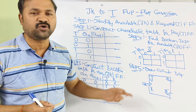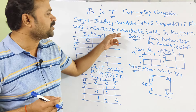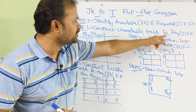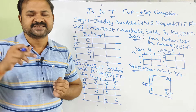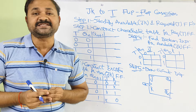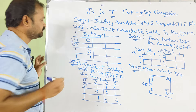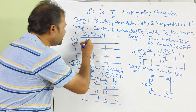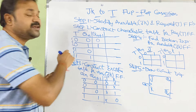Step 2 is based upon the required flip-flop, whereas step 3 and step 4 are based upon the available flip-flops. Step 2 is to construct the characteristic table for the required flip-flop, which is the T flip-flop. Here we have 2 inputs: T and Qn, whereas the output is Qn+1. If T value is 0, then Qn+1 is equal to Qn.